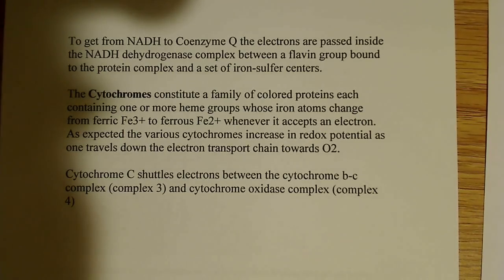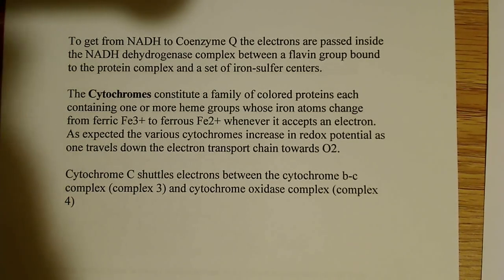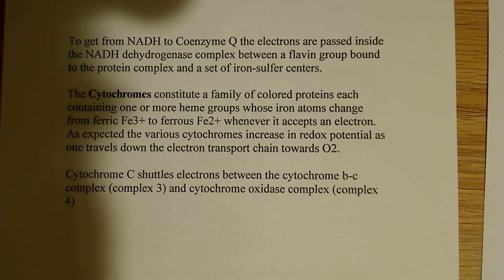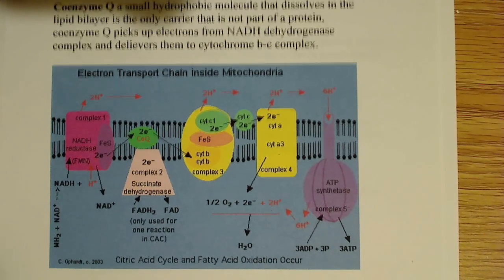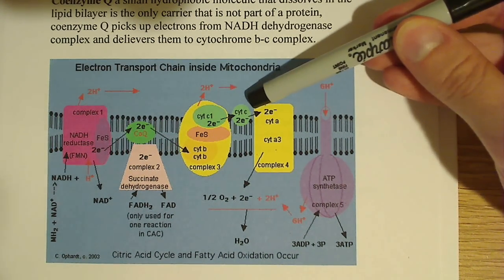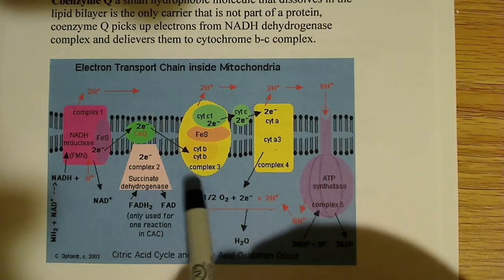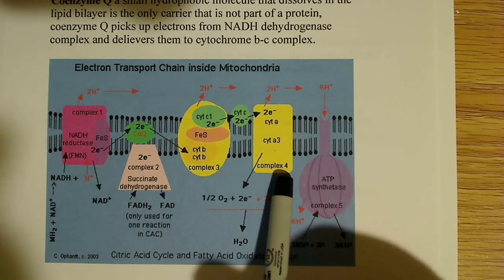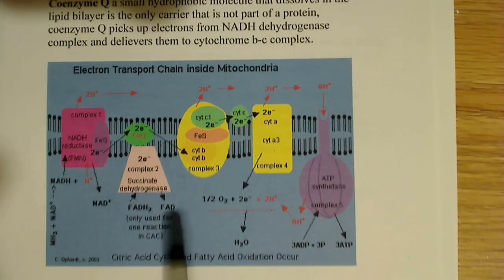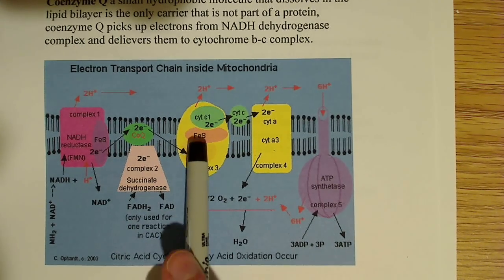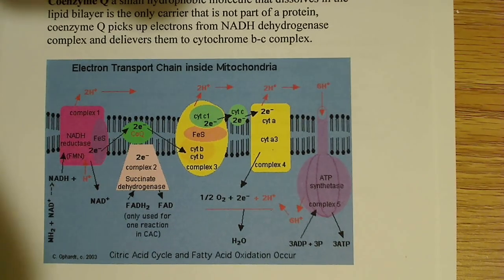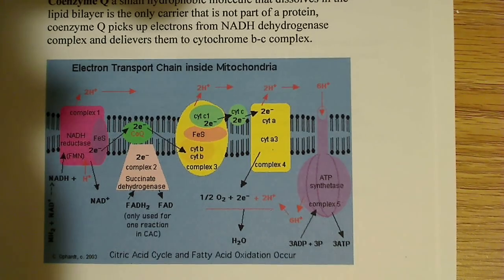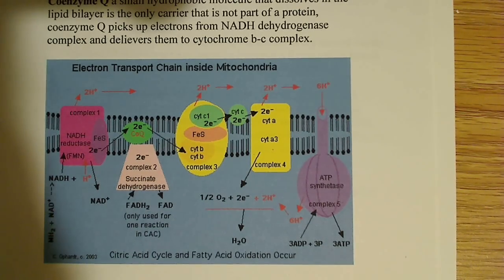Cytochrome C shuttles the electrons between the cytochrome BC complex, complex 3, and cytochrome oxidase complex, which is complex 4. Going back to our chart here, we can see that cytochrome C is right here, and it's transporting the electrons between complex 3 and complex 4. There are other cytochromes in here—this goes to cytochrome B, and then another FES, and then cytochrome C1, and then finally to cytochrome C. There's a lot of detail here. In an introductory course, you're probably not going to be expected to know all the details of this, but just understand the intuitive principles of it.